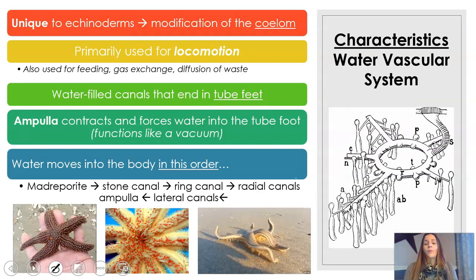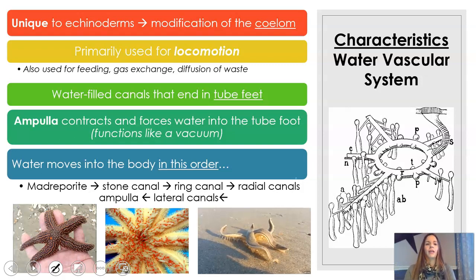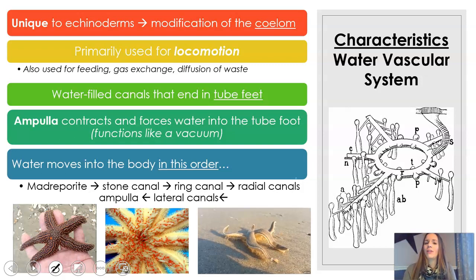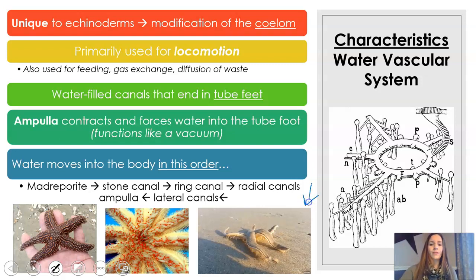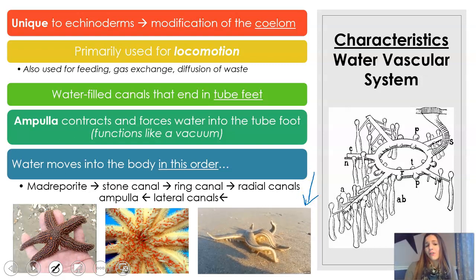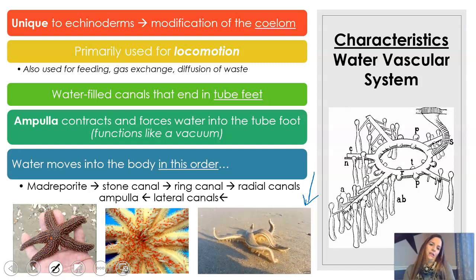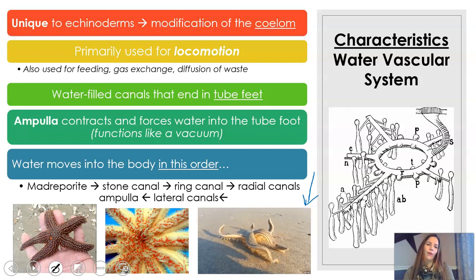A little bit more about the water vascular system. It's unique to echinoderms — they are the only organisms that have this — and it's thought to be a modification of the coelom, which is that body cavity. It's mostly used for locomotion, as you can see in this video, but it's also used for other things like feeding — especially sea stars, which use it to pry open clams — and then also for gas exchange and diffusion of waste.